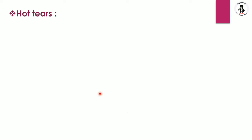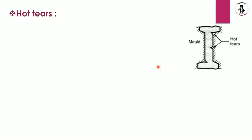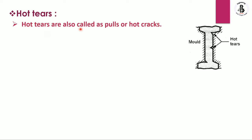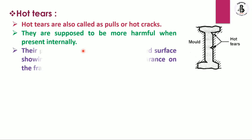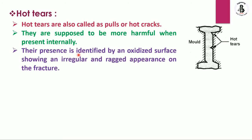Next are hot tears, also called pulls or hot cracks. They are found in mold castings and are more harmful when present internally. Their presence is identified by an oxidized surface showing an irregular and ragged appearance on the fracture surface.